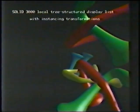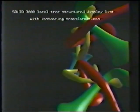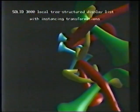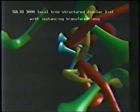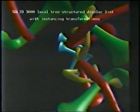We provide a local tree structure display list format, which is useful in connecting to CAD-CAM applications. Here you can see that one object — the green handle — has been replicated several times to make up an assembly of objects, and then that assembly has been replicated again.